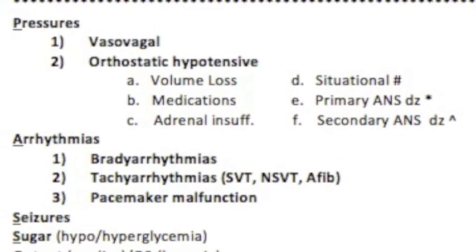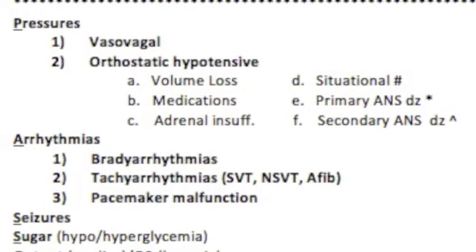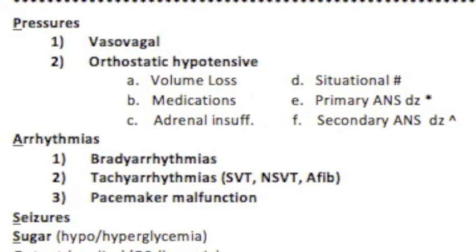P is for Pressure — hypotensive causes, by far the most common cause of syncope. Number one is vasovagal, and number two is orthostatic hypotension, which can be due to volume loss, medications, adrenal insufficiency, situational causes, primary autonomic nervous system disease, and secondary autonomic nervous system disease.